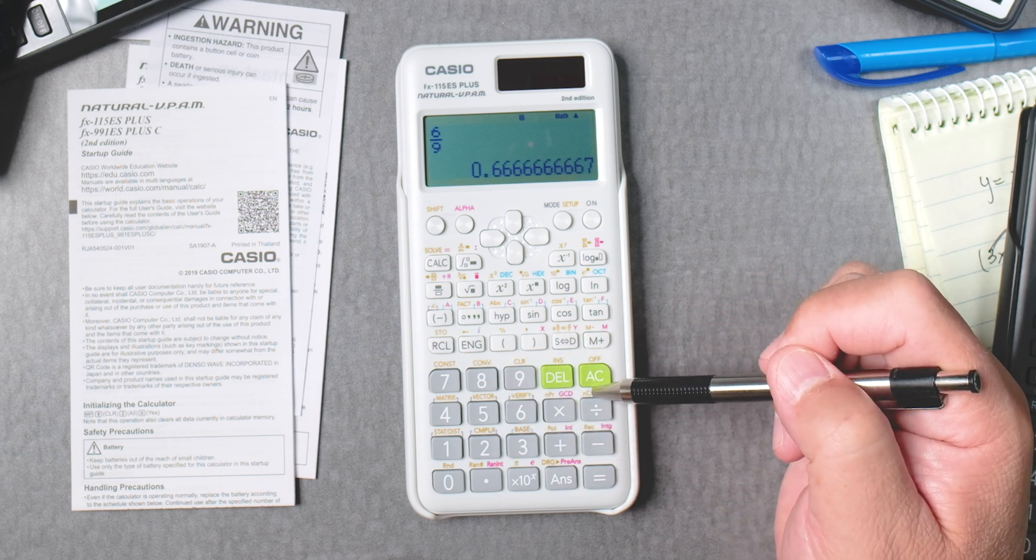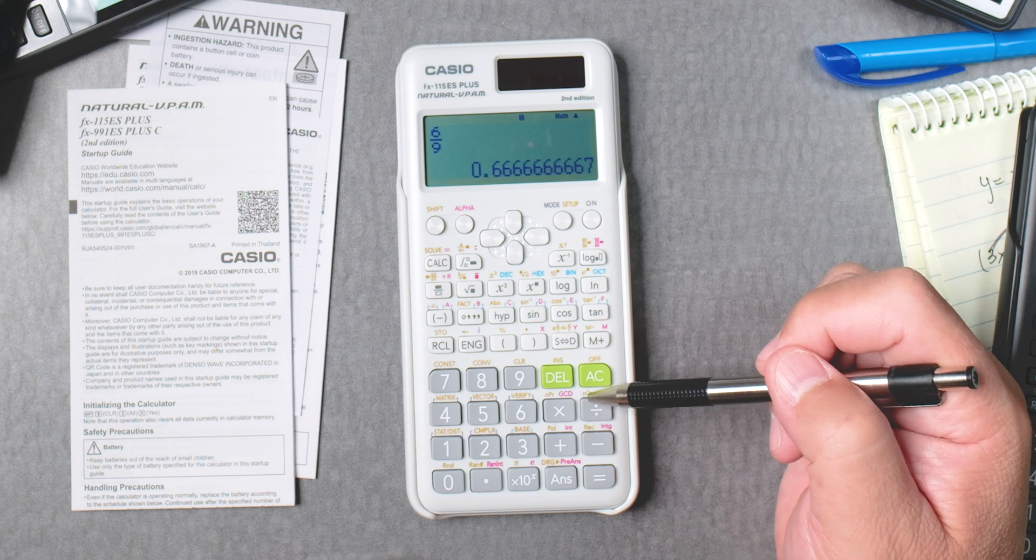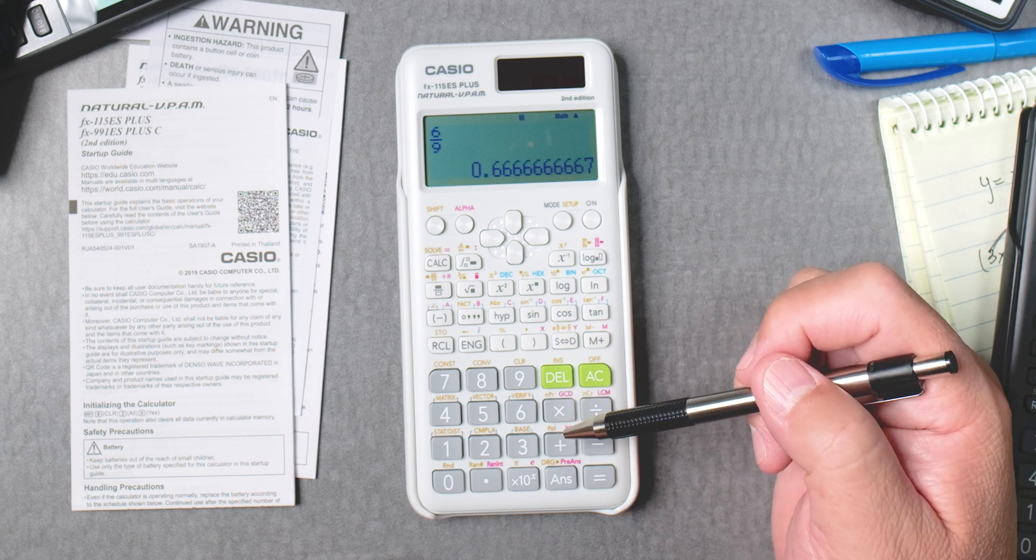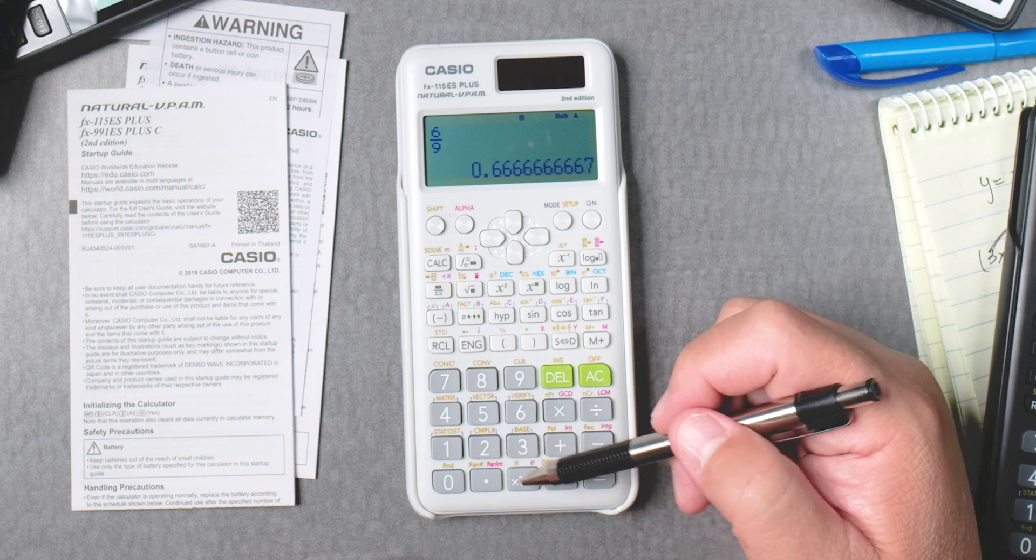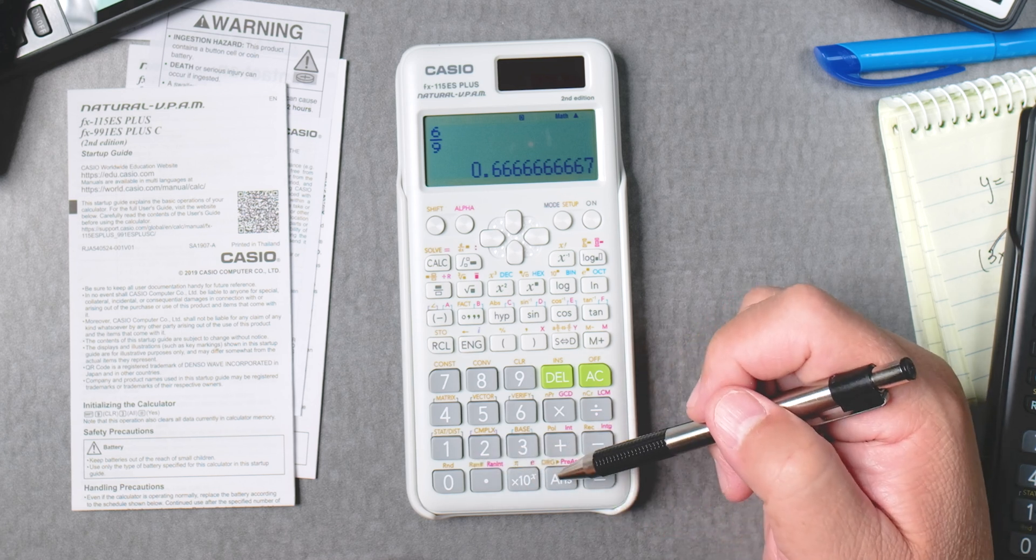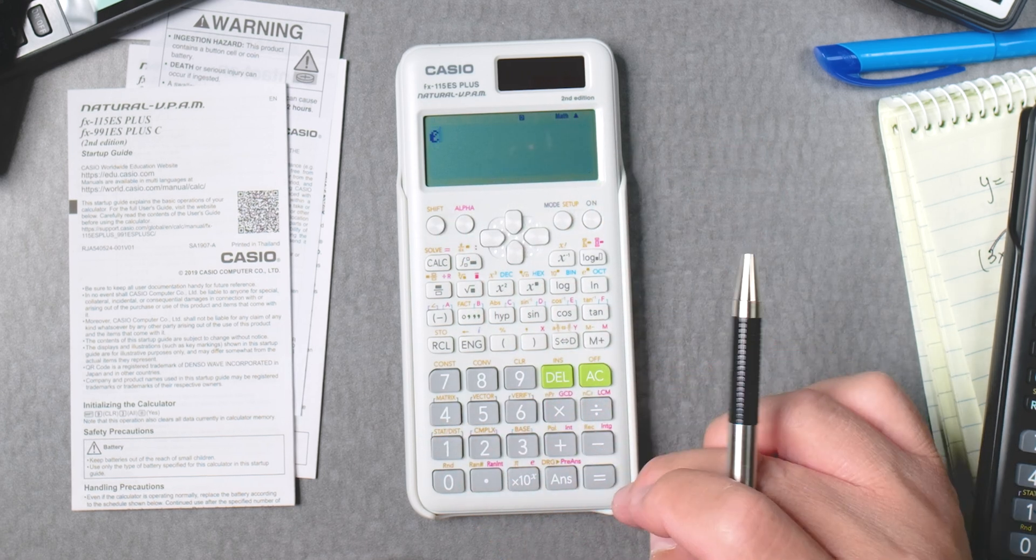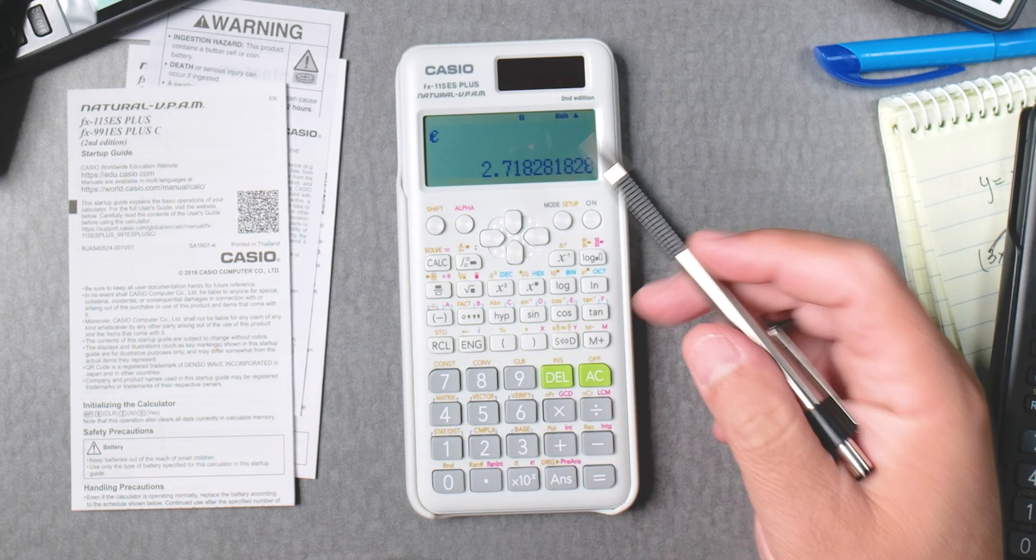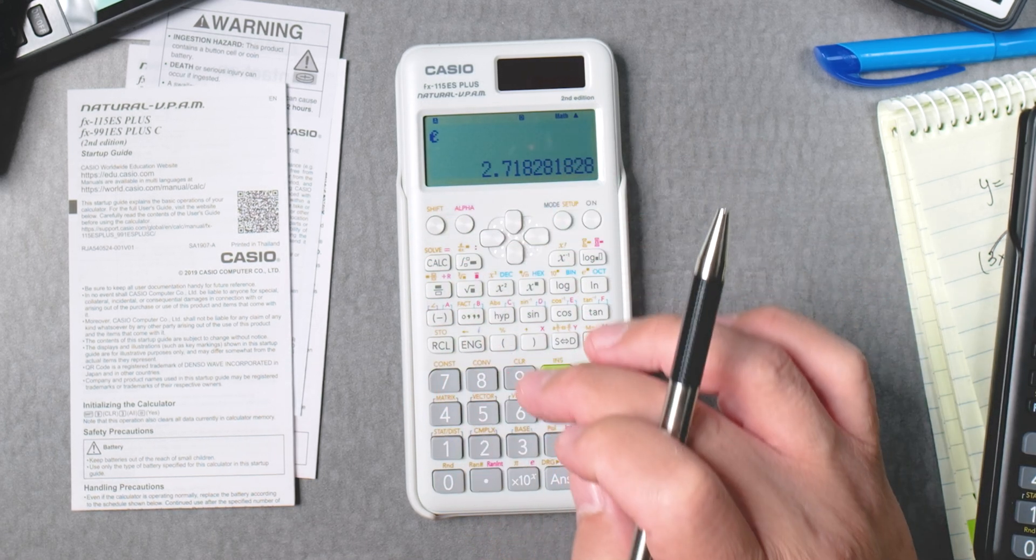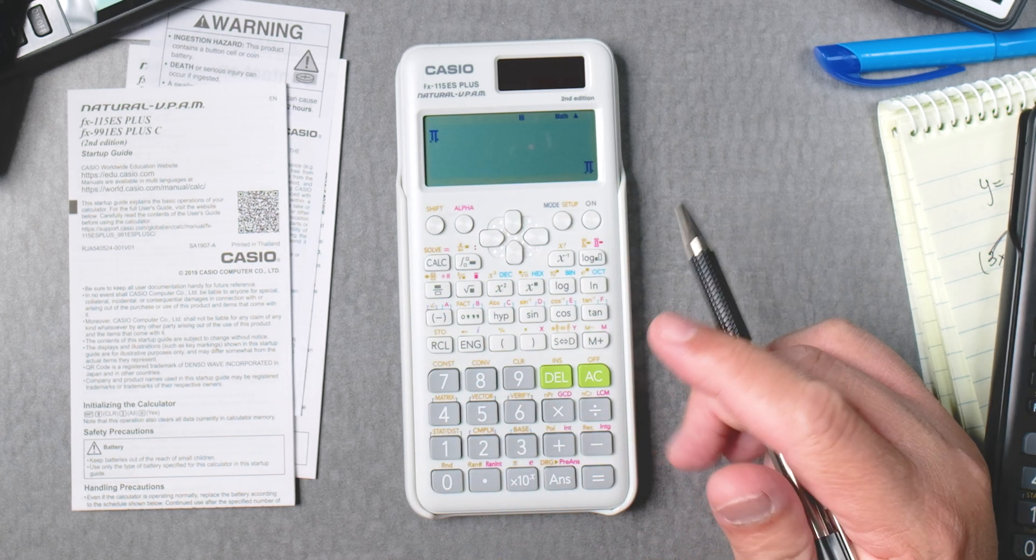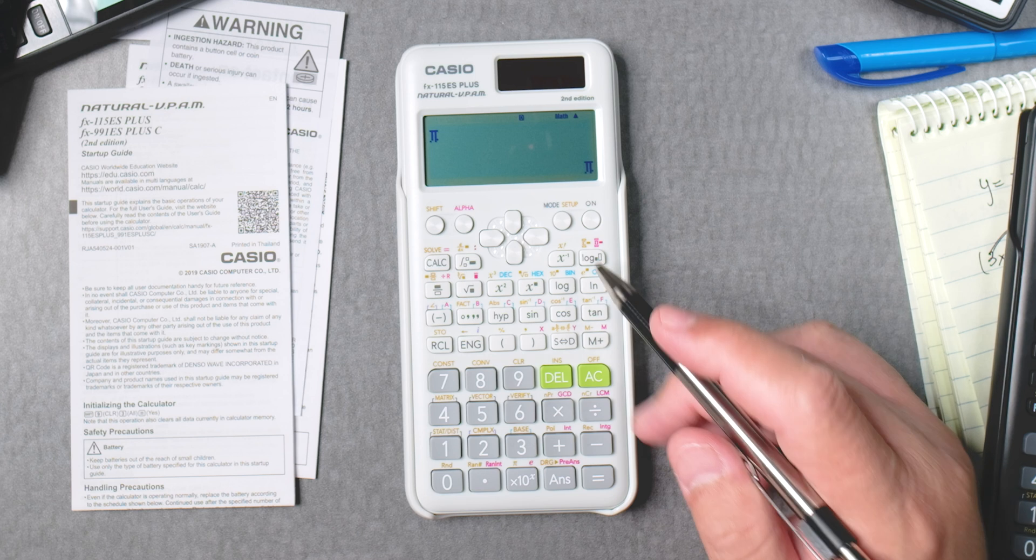This is interesting. Times 10 to the x, an answer key, an equal key. Delete AC button. You have a stats distribution button here. Complex, complex or complete, I'm not sure what that is. Base, matrix, vectors, verify, constant, and so forth. Combinations, permutations. Pole, maybe for polar, I'm not sure. Random number, pi, e. That's in red. I wonder what that is. Let me see. Just e itself. That's nice. And then shift, pi. That's nice.